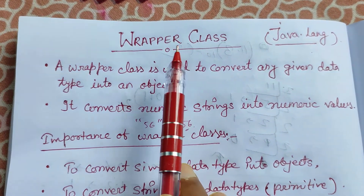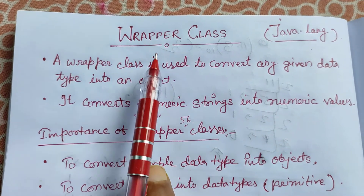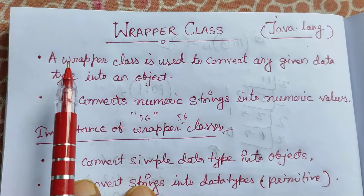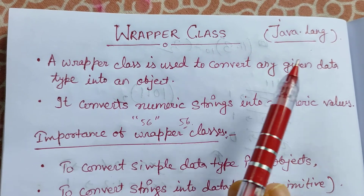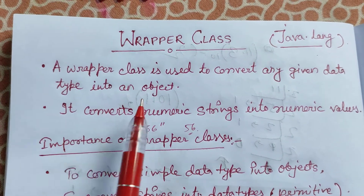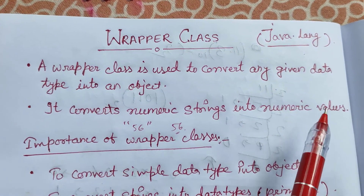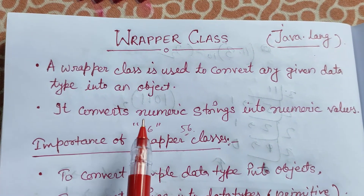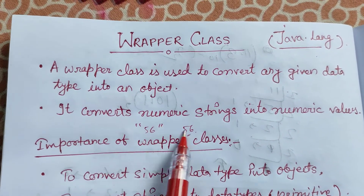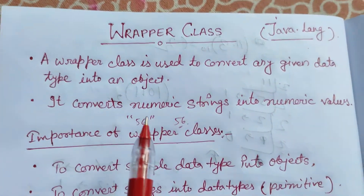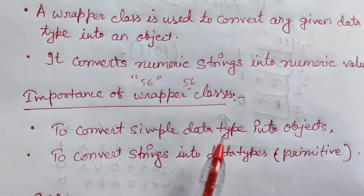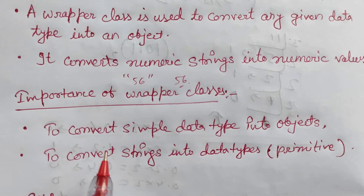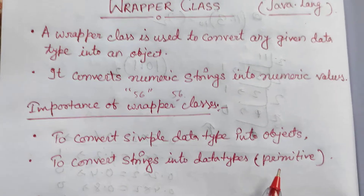Our topic is wrapper class. A wrapper class is an inbuilt class present in Java under the java.lang package. The use of wrapper class is to convert any given data type into an object. It is also used to convert a numeric string into numeric values — for example, converting the string "56" into the integer 56. The importance of wrapper class: it converts simple data types into objects and converts strings into primitive data types.